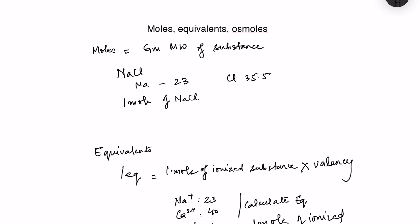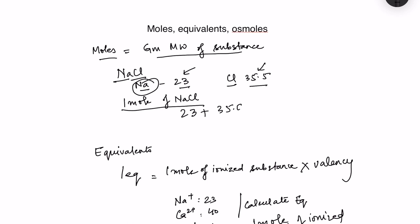What is moles? Moles is basically the gram molecular weight of a substance — the molecular weight of the substance is equal to one mole. For example, NaCl: the molecular weight of sodium is 23 and chloride is 35.5. One mole of NaCl will be 23 plus 35.5, which equals 58.5 grams — that is the gram molecular weight of NaCl.